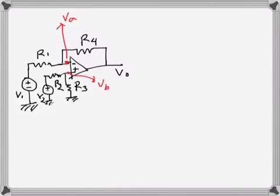Here I'm going to talk about a difference amplifier. Two voltage sources v1 and v2 are here — this is v1, this is v2, and these are the resistances. We'll see how this circuit can act as a difference amplifier. This point's voltage is va.